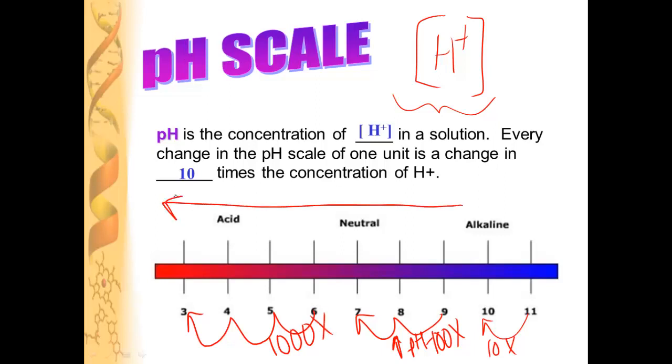So the lower your pH, the more hydrogen ions you have in the solution, and that makes you acidic.